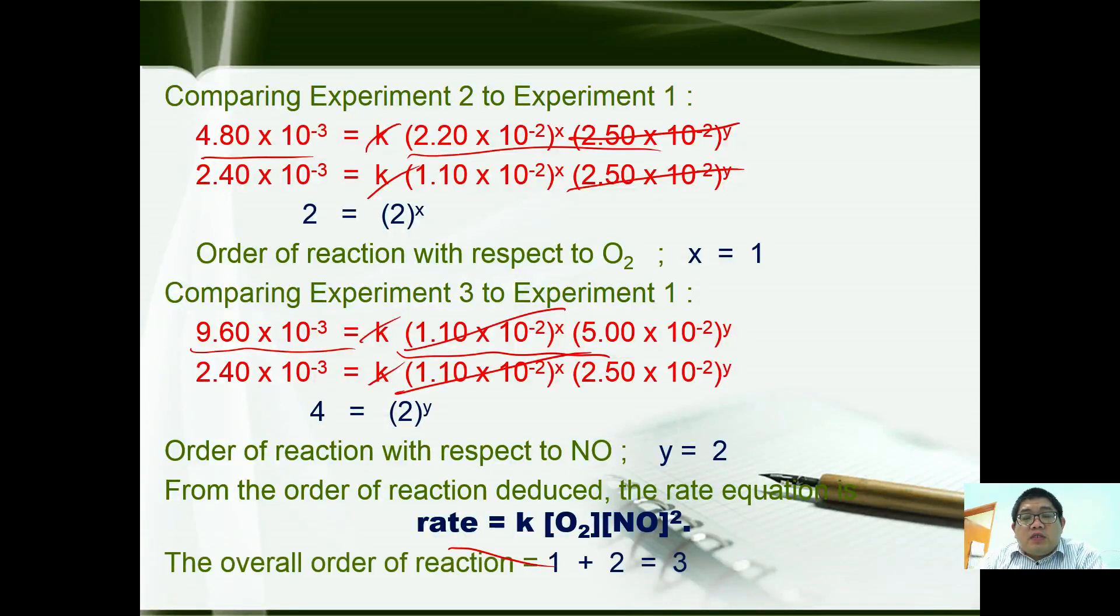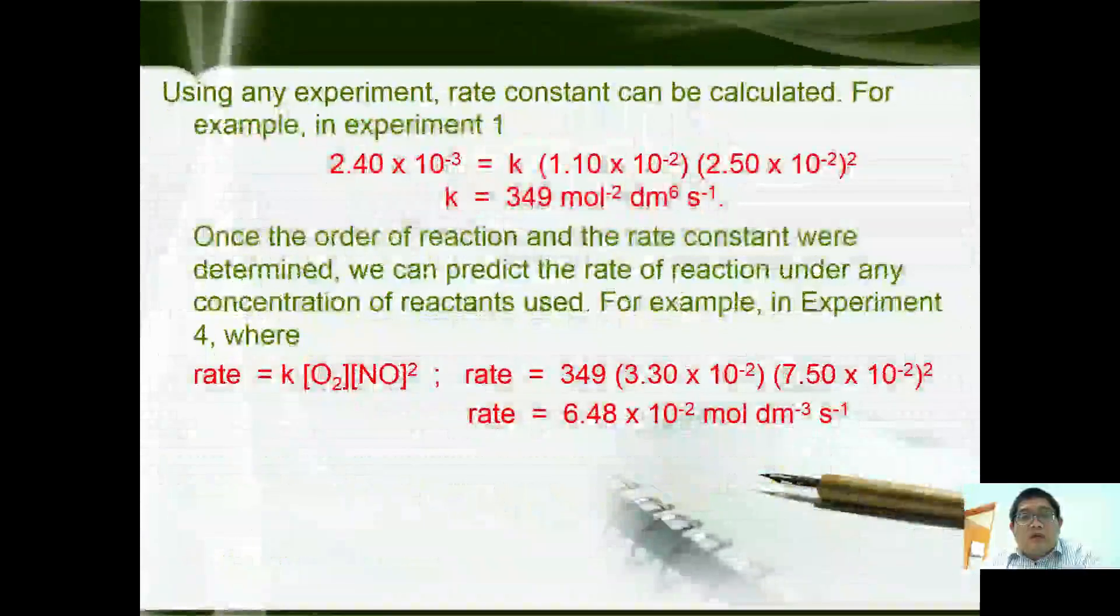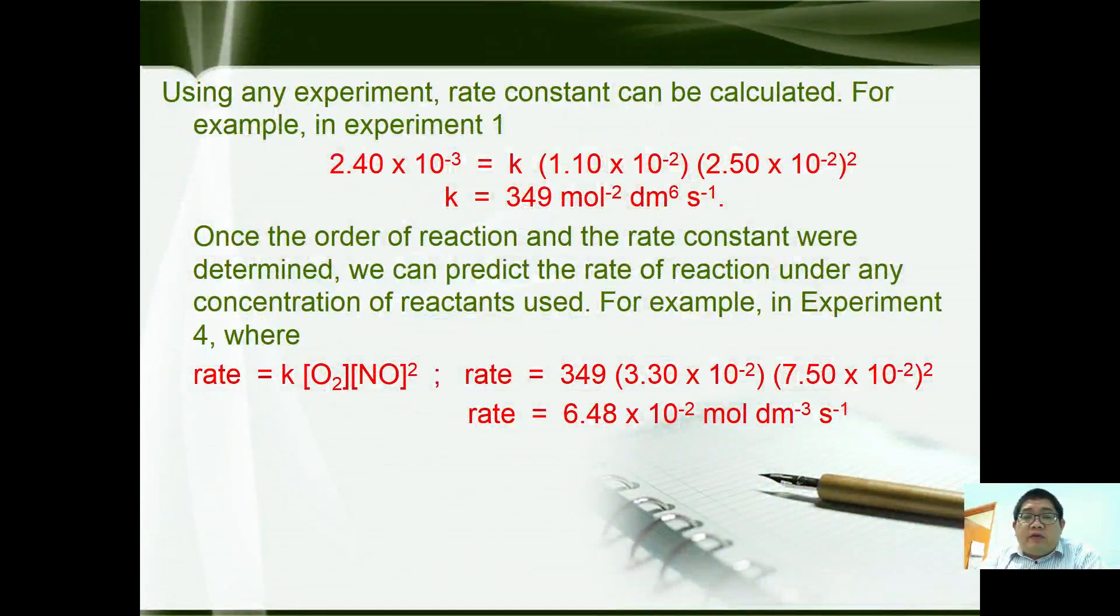So the overall order of reaction is third order. Using any experiment, the rate constant can be calculated. For example, if we use experiment 1, we substitute all the figures. You have 2.40 × 10⁻³ = k(1.10 × 10⁻²)(2.50 × 10⁻²)². We get a rate constant of 349 mol⁻² dm⁶ s⁻¹.